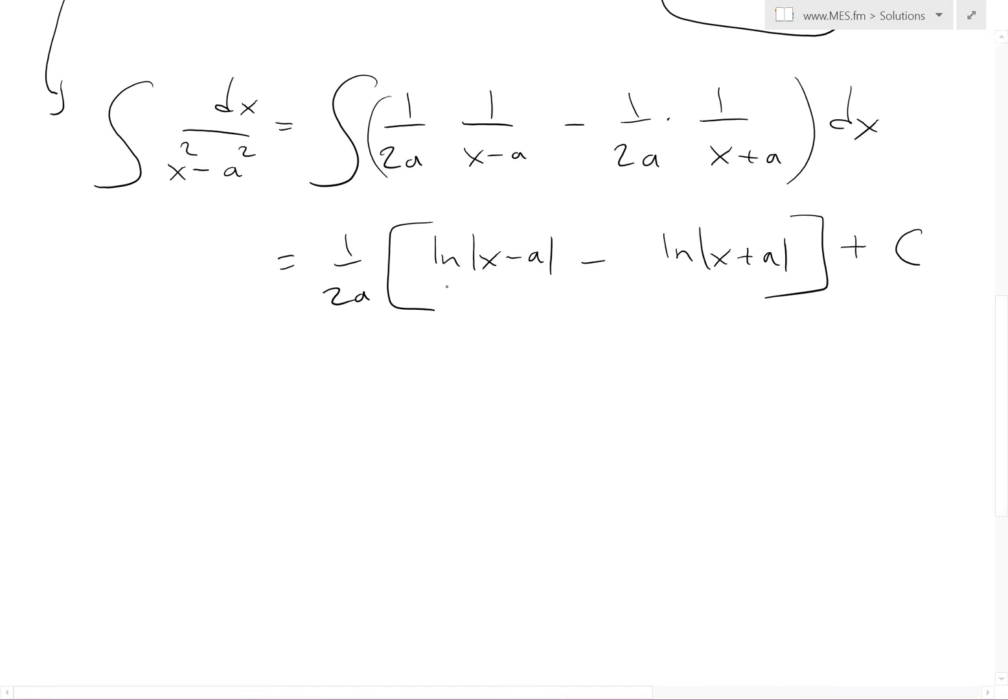And now if we use natural log rules, what we could do is put these all together. The integral of dx over x squared minus a squared equals 1 over 2a. Now when we apply natural log rules, since this is division, when you subtract, this is the same thing as ln of x minus a over x plus a, plus C.